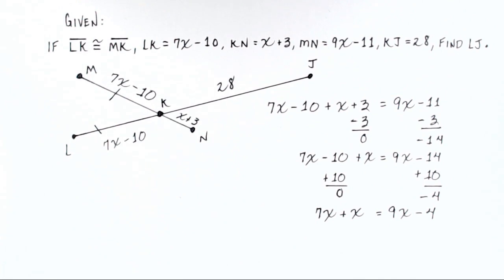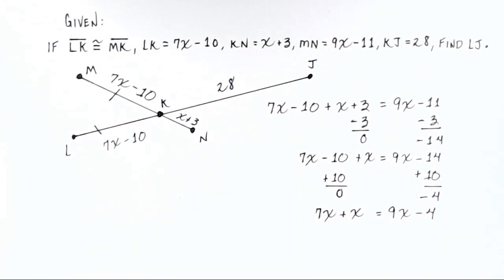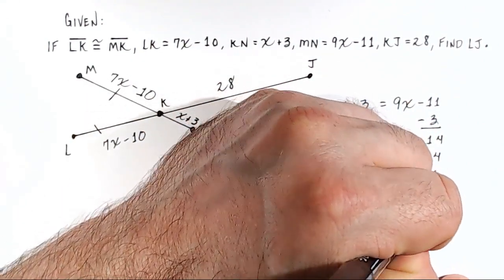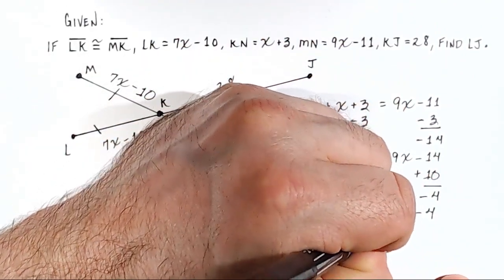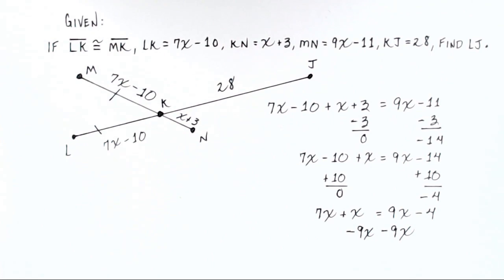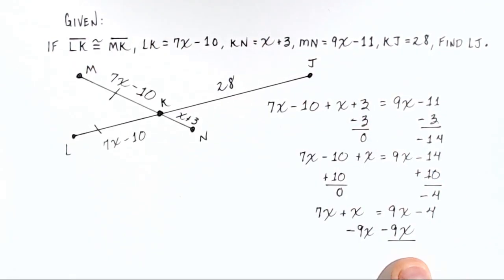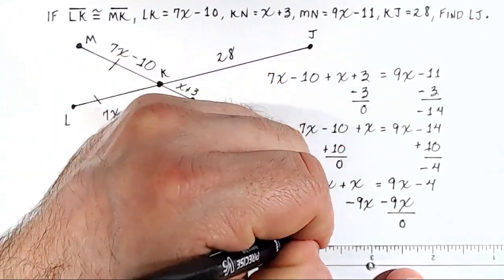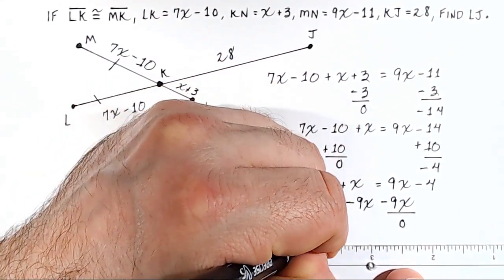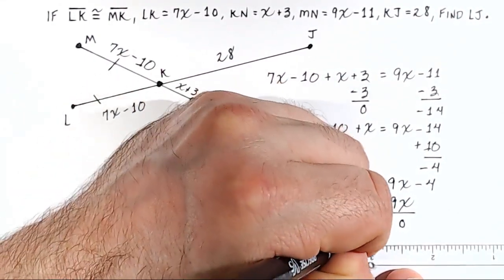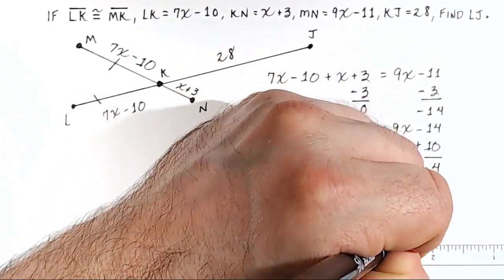Now we need to move 9x over to join the other x terms on the left side. We subtract 9x from both sides. On the right side, 9x minus 9x equals 0. Rewriting the left side: 7x plus x minus 9x equals negative 4.